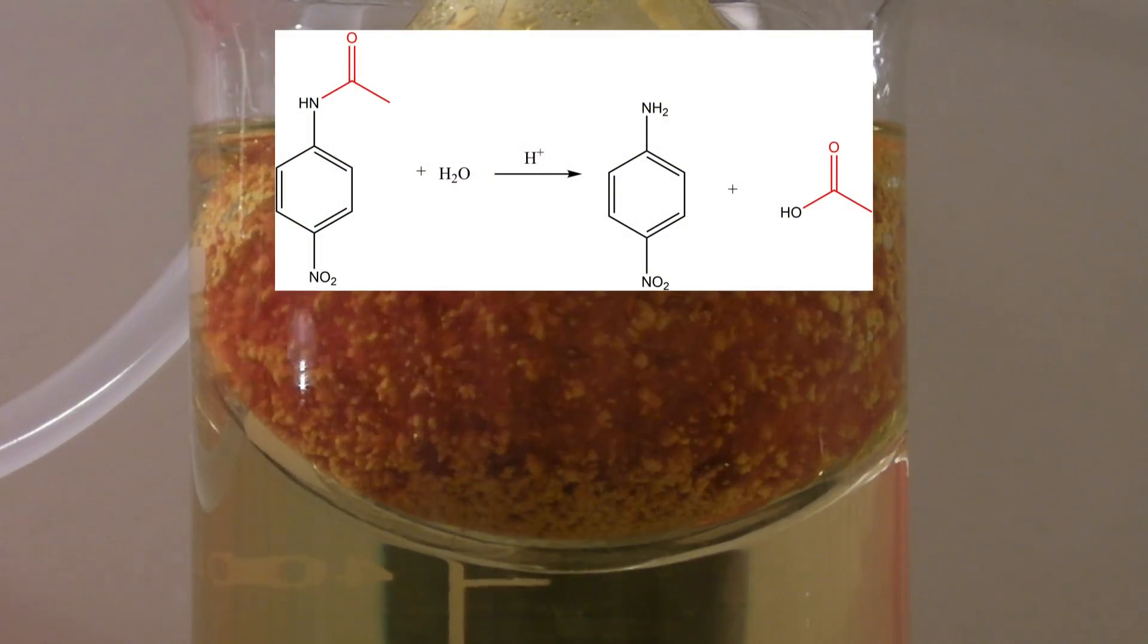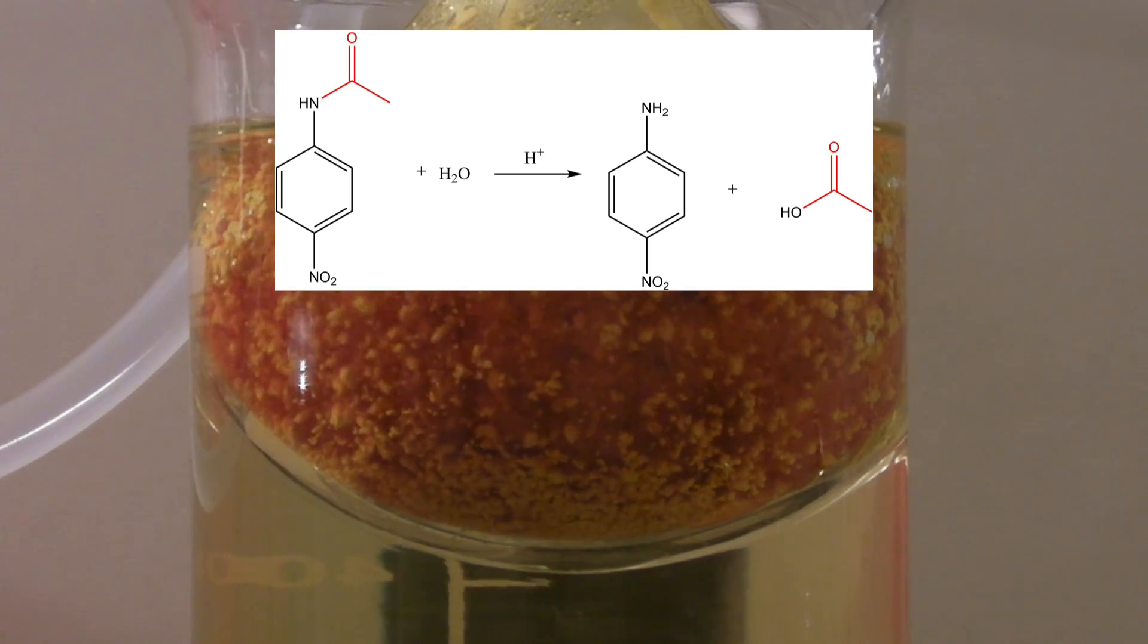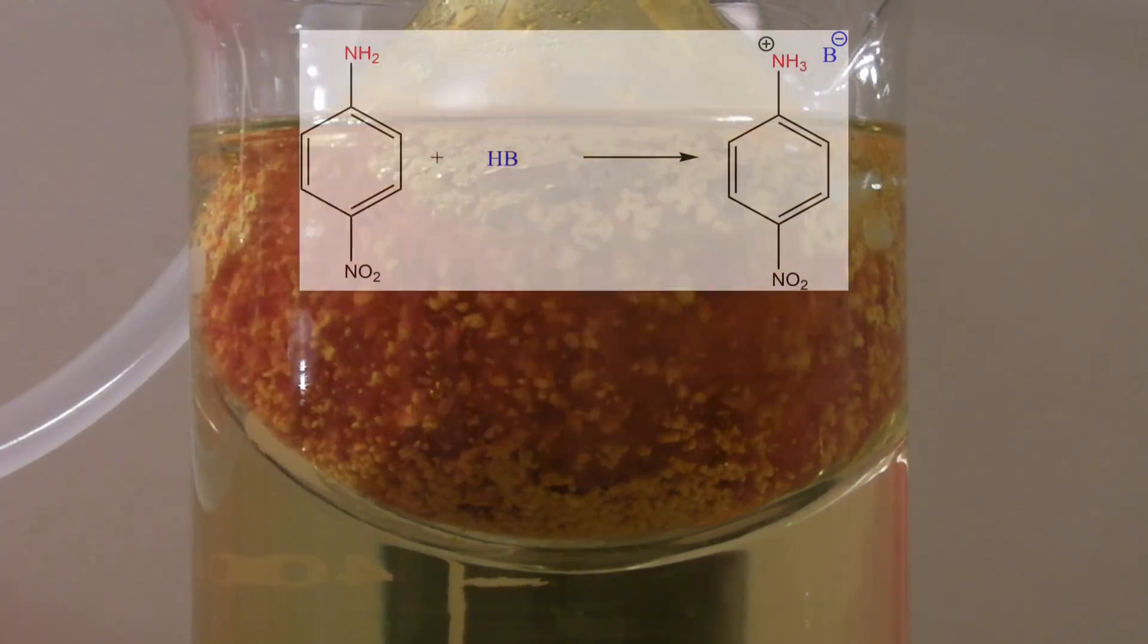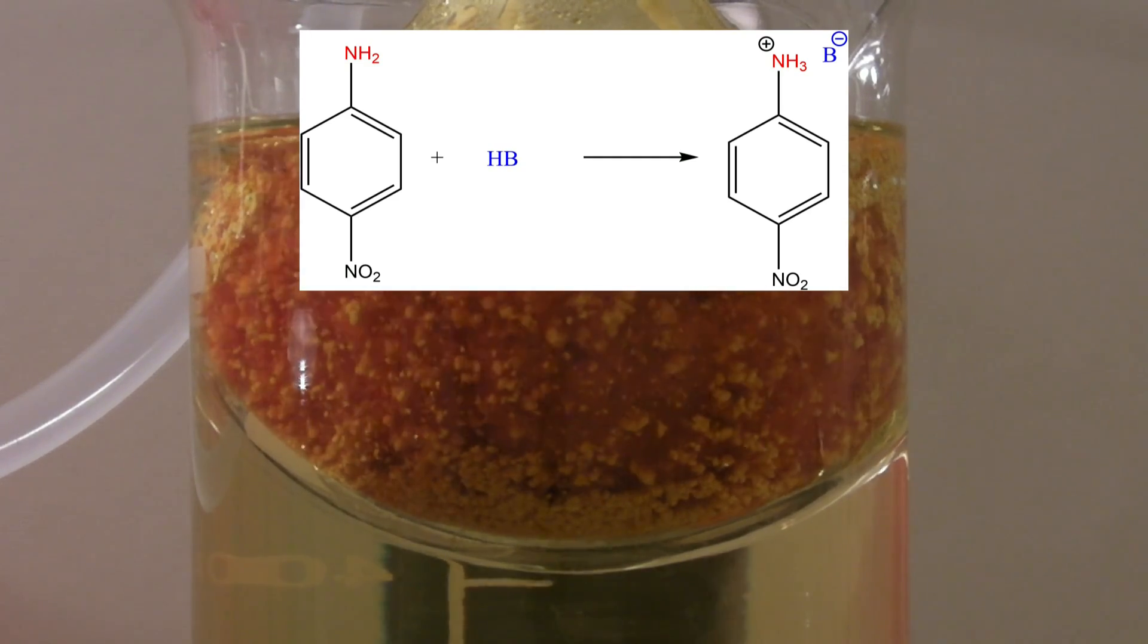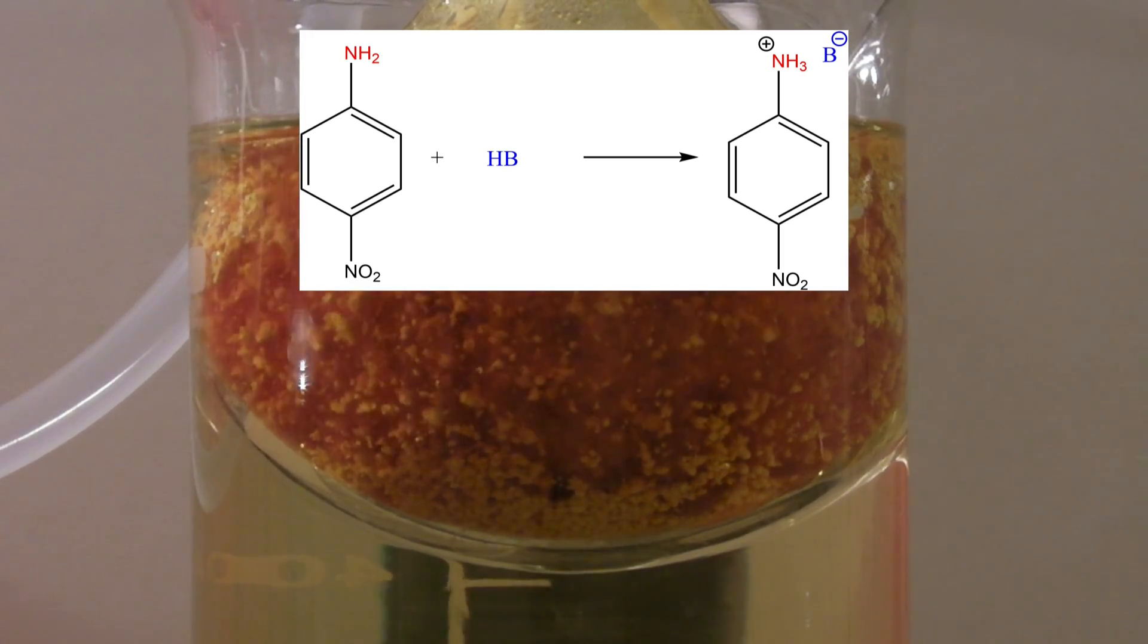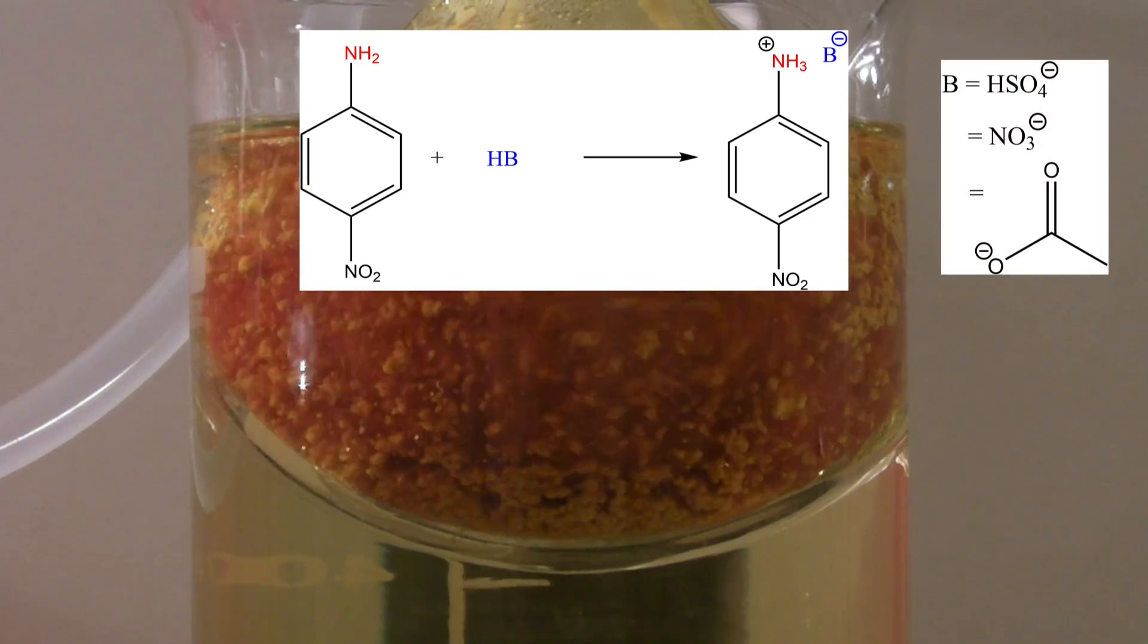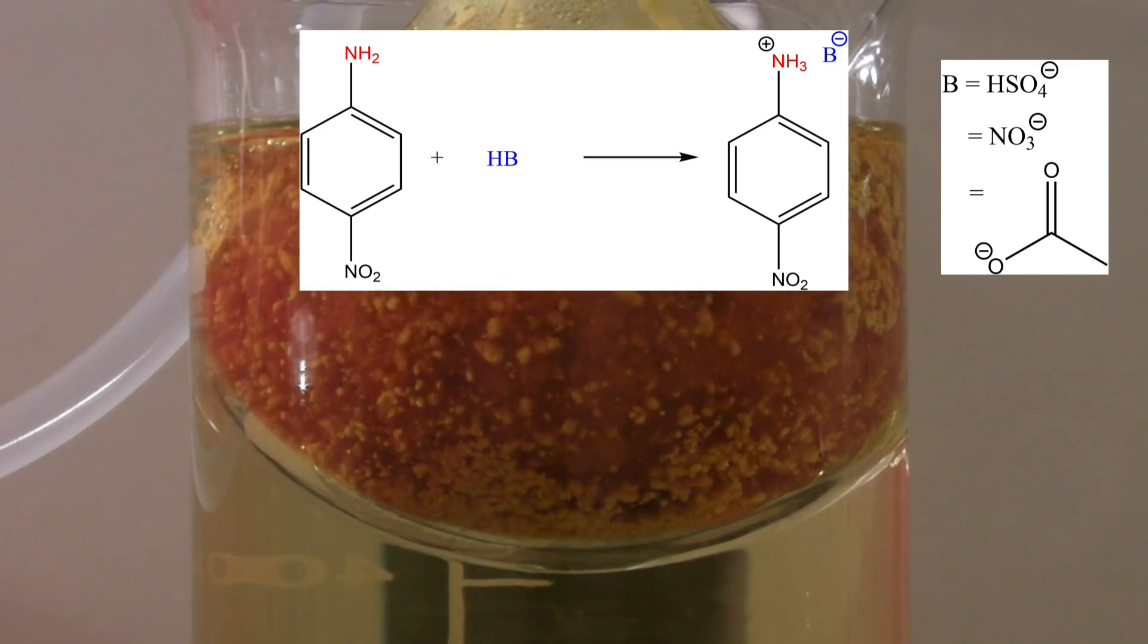In this step an acid-catalyzed hydrolysis of the amide bond takes place. This causes p-nitroaniline and acetic acid to form. The solution contains sulfuric, acetic and nitric acid which are represented by H+ and can react with the amine to form the ammonium salt. Depending on the acid the anion can be the bisulfate, nitrate or acetate while the bisulfate is the most likely due to the strength of the acid. The salt is water-soluble.